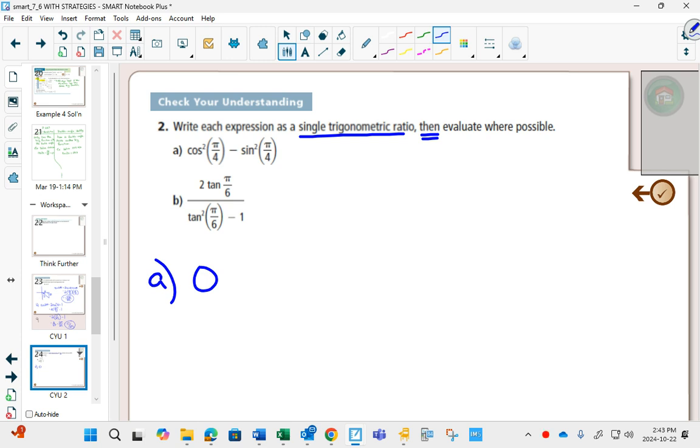But we're not following the instructions, because the instructions say to first write it as a single trig ratio, then evaluate. In fact, if you were given this one to evaluate, I hope that you would do it directly just like that. But since we have to first write it as a single trig ratio, we have to recognize this as an identity.